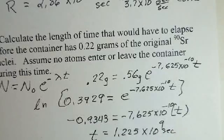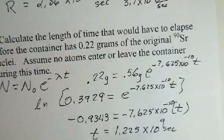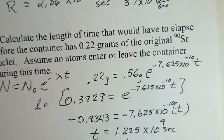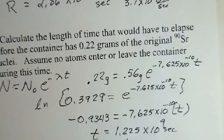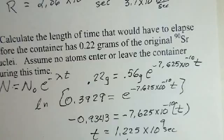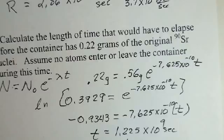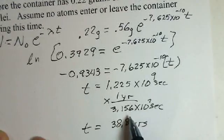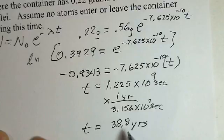Again, I'm going to apply a conversion factor. So to put this into years, one year, 3.156 times 10 to the seventh seconds. And I come up with 38.8 years. I'm going to apply the conversion factor, 3.156 times 10 to the seventh seconds for a year. I get 38.8 years.